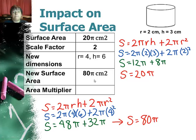Well, if you look at that area and compare it to the original, it is 4 times bigger. I have to multiply this 20π by 4 to get 80π.